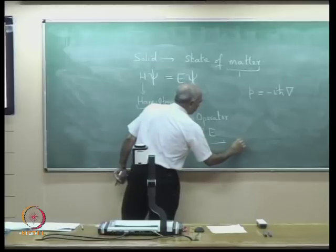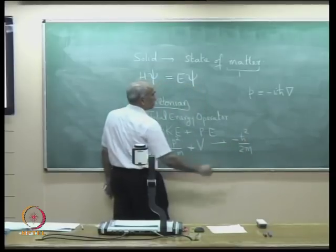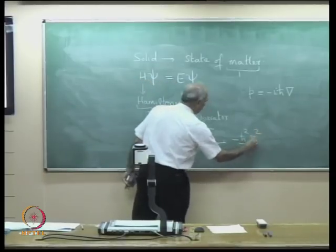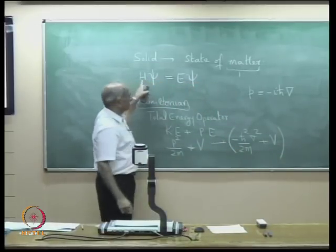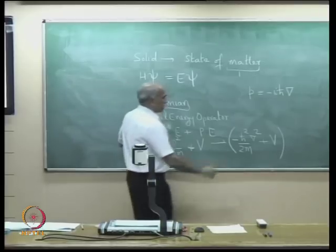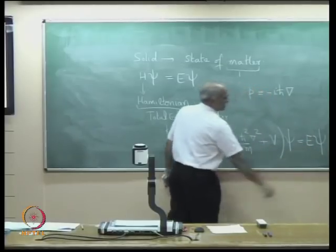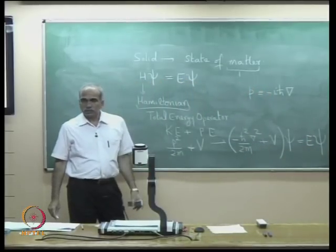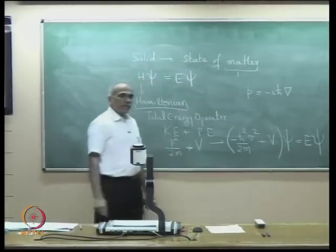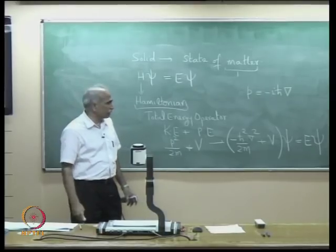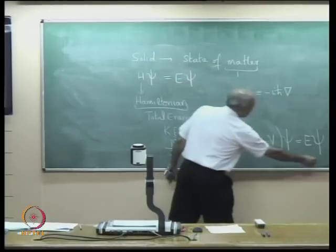This gives you: −(ℏ²/2m)∇²ψ + Vψ = Eψ, where E are the energy eigenvalues and ψ are the eigenfunctions. There could be more than one energy eigenvalue — this is the Schrödinger equation.